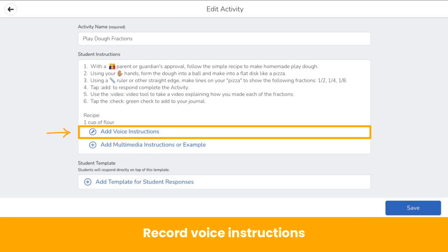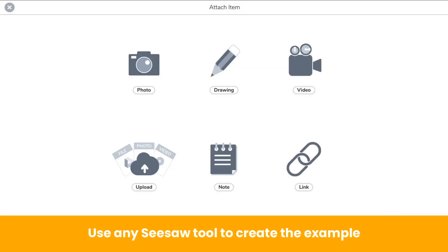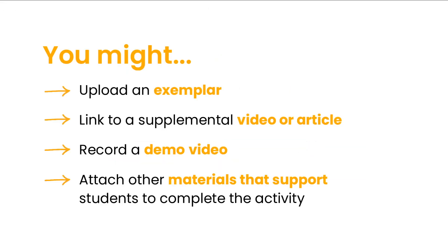You can also record voice instructions. Attach a multimedia example like an exemplar, instructional video, or a picture that gets students interested and excited. You can use any Seesaw tool to add your example — you might upload an exemplar, link to a supplemental video or article, record a demo video, or attach other materials that support students to complete the activity.